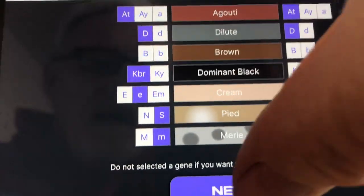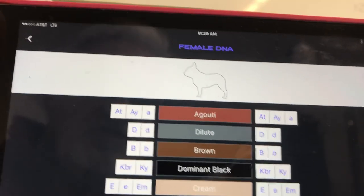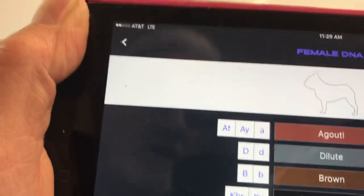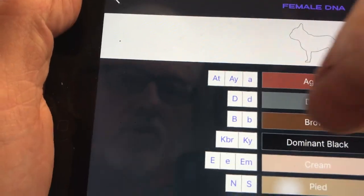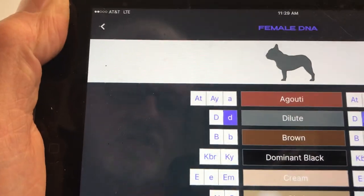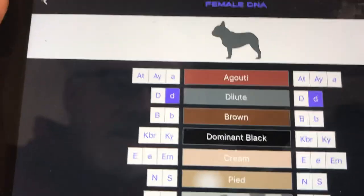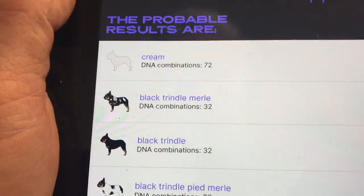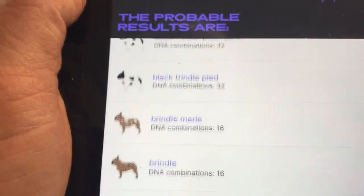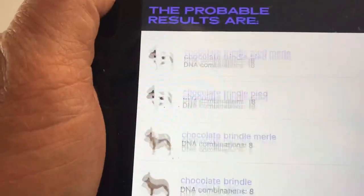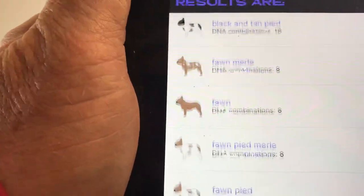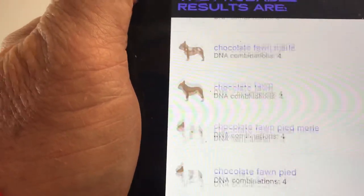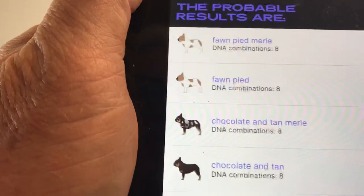Then you can do next and put in the information on the mom. So let's make this mom a blue dog as well, so it'll be little d little d, and there she is, just a straight blue dog. And then next, and now it takes a few seconds here and now it shows you all of the different dogs that you'd expect to get from that combination with their colors.